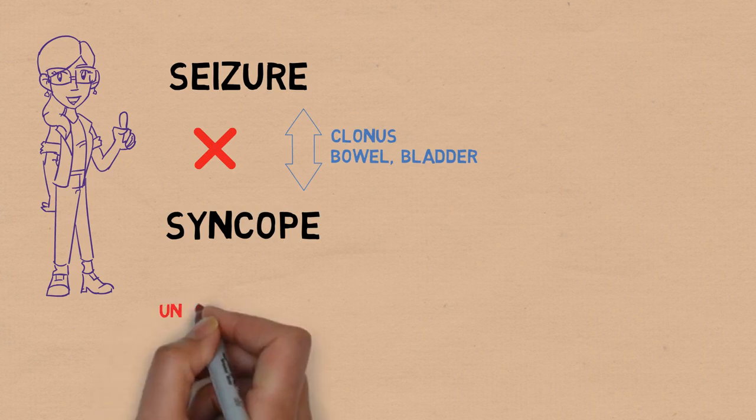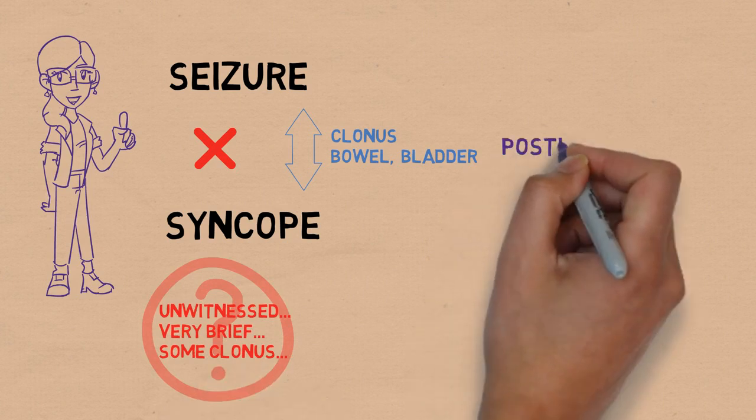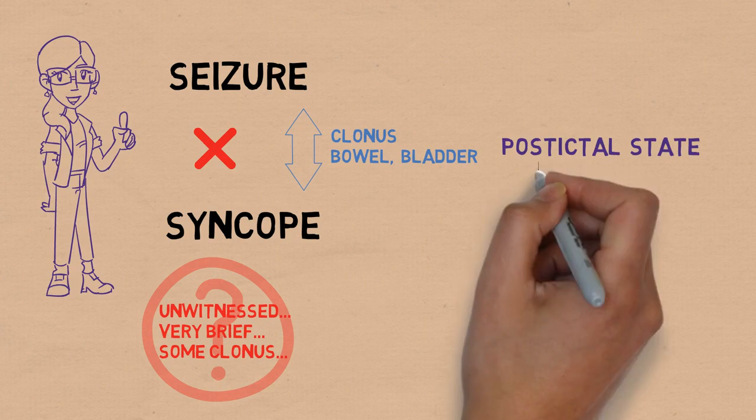So for those uncertain cases, such as an unwitnessed or very brief seizure, or a syncope with some clonus and bladder emptying, the most reliable sign is the duration of the post-ictal state. That is the period of confusion or lethargy that follows the event or ictus.